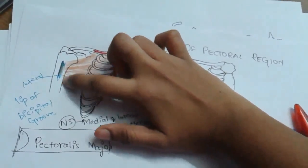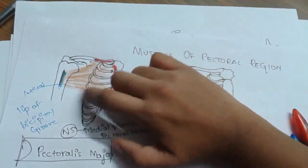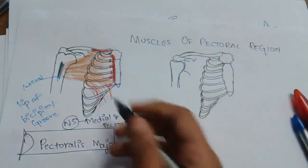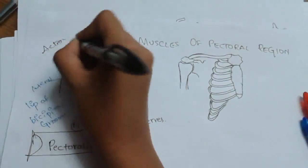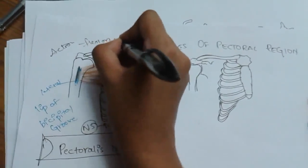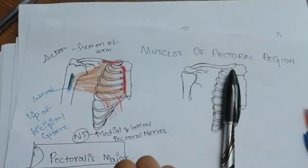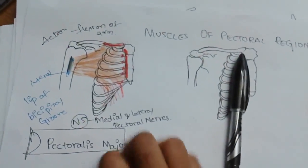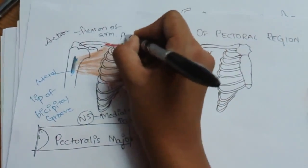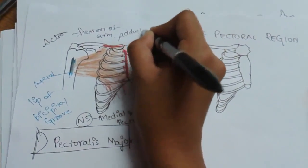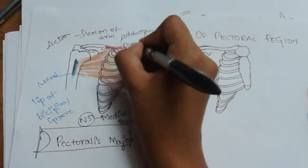When it contracts, the humerus moves towards the body — towards the midline. So it helps in flexion of the arm, and it also helps in adduction of the arm, moving the arm towards the midline.